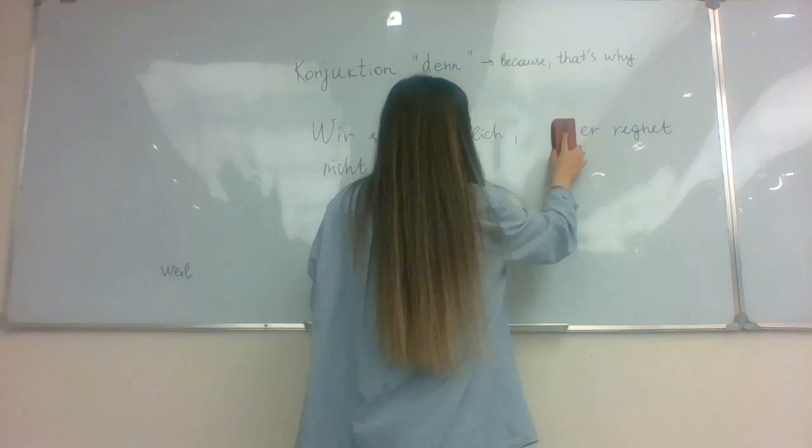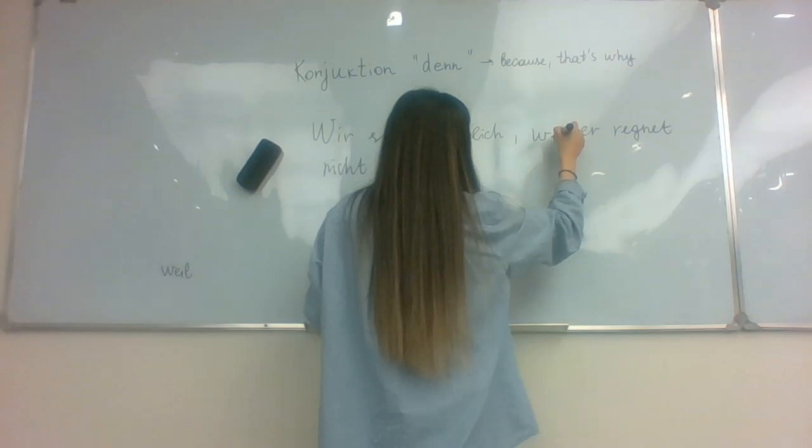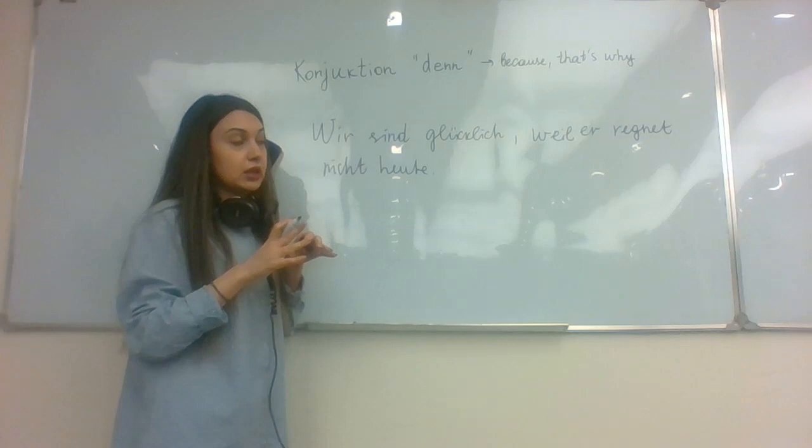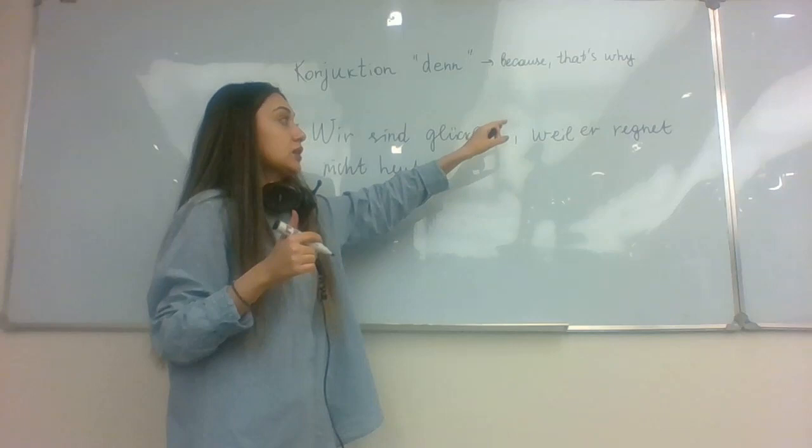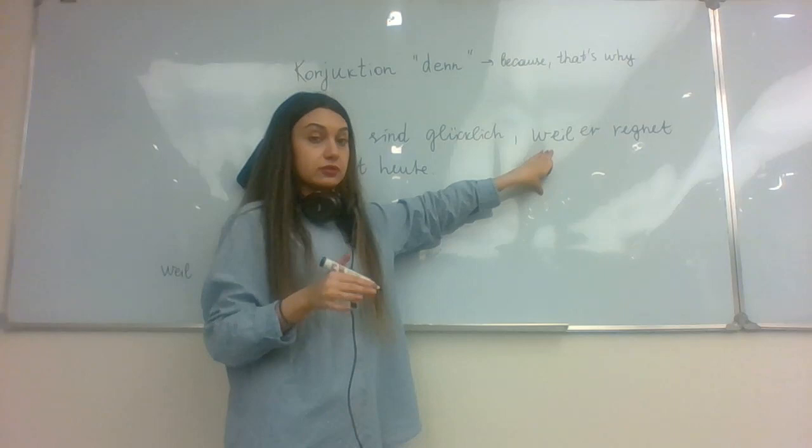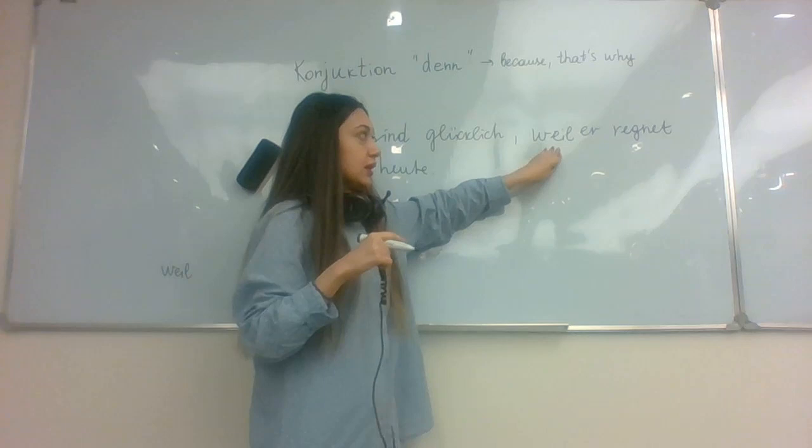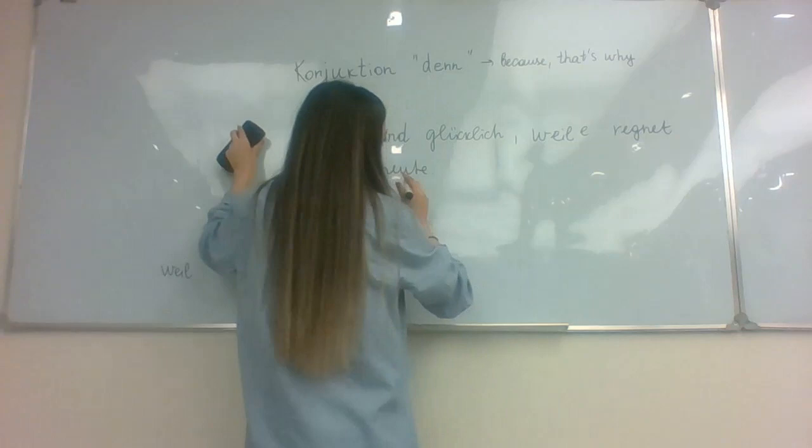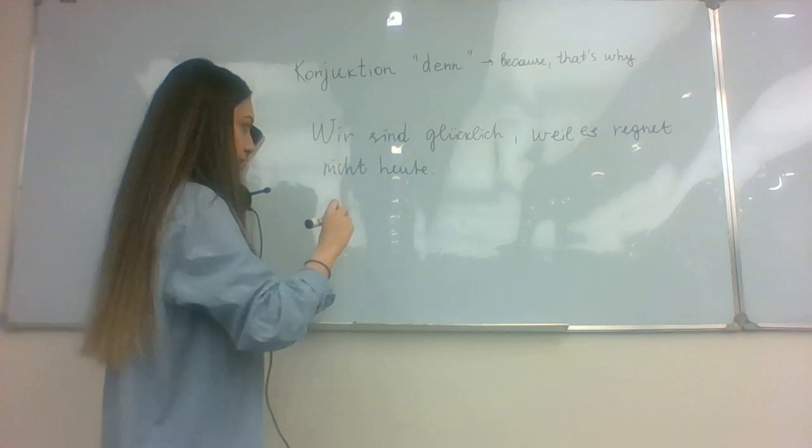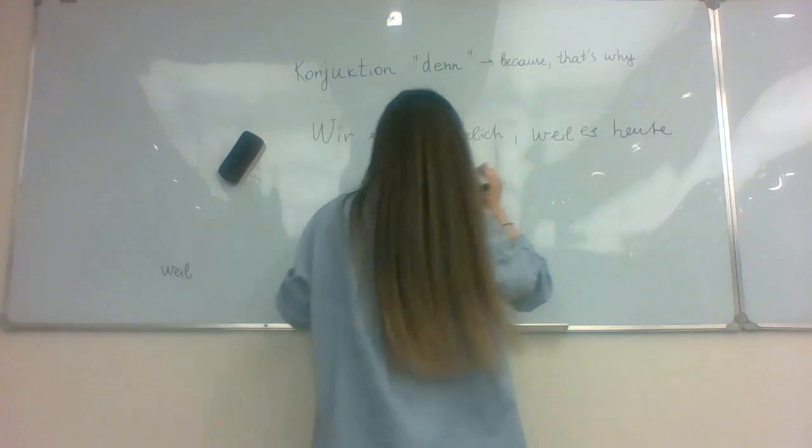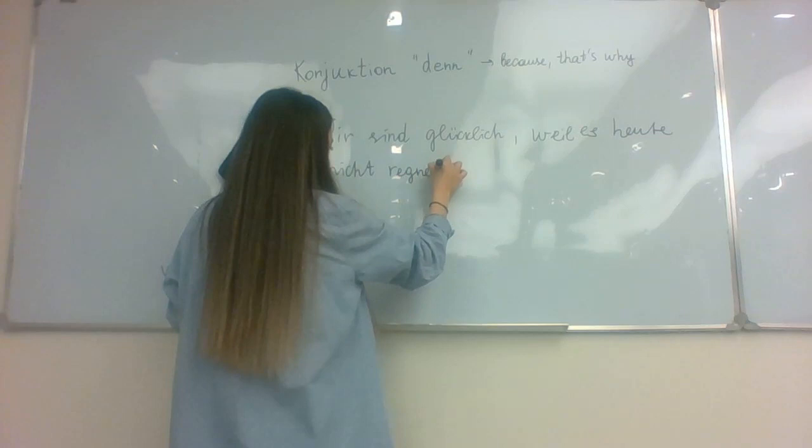But if we will write instead of denn weil, because in this sentence and in all of another sentence which I said as an example we say that we can use both of them and they have the same meaning, but we will see here also the difference between them. If we'll replace them with weil it's possible and grammatically it's correct, but then we have to change the sentence structure and the position of the verbs in our sentence. So weil, wir sind glücklich, weil es heute nicht regnet.